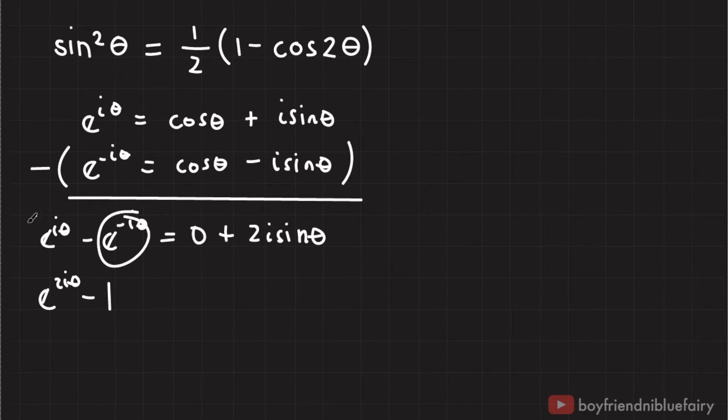Another term when you multiply this with this, so I'll have another negative one here. Then plus e to the negative 2i theta equals 4i squared, which is negative one, times sine squared theta.